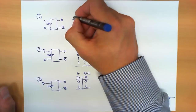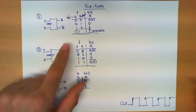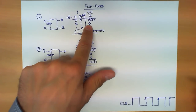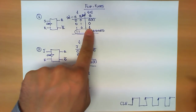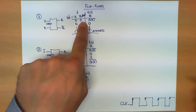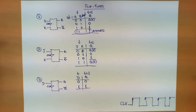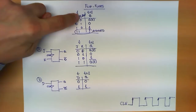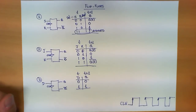In the SR flip-flop, R is for resetting the output to 0, S is for setting the output to 1, 0-0 means neither set nor reset so the output remains the same, and 1-1 is to be avoided. The JK flip-flop is easy to remember because J is the equivalent of S and K is the equivalent of R, with the exception that when both are 1, the outputs change to the opposite value.